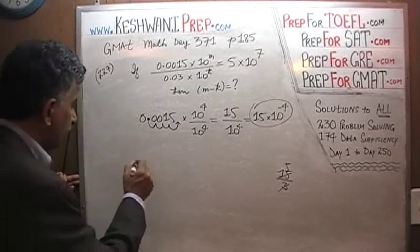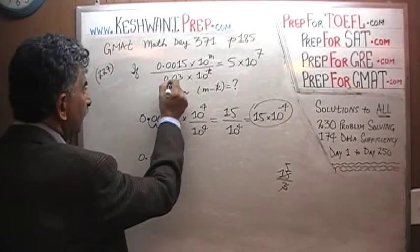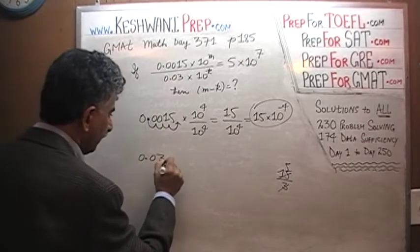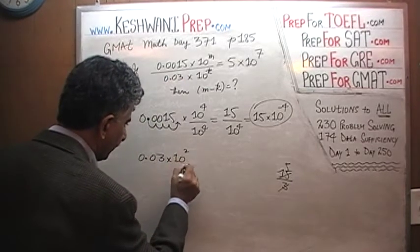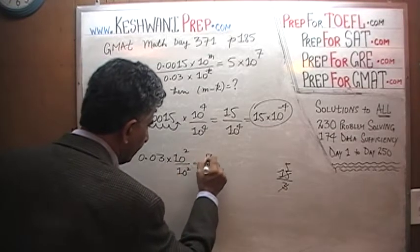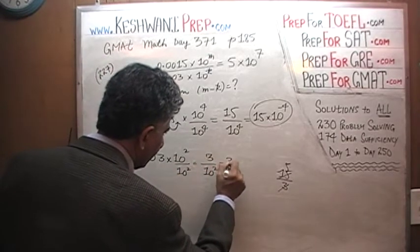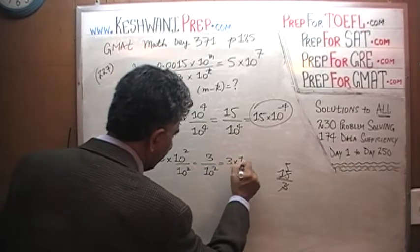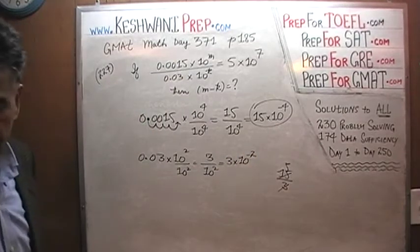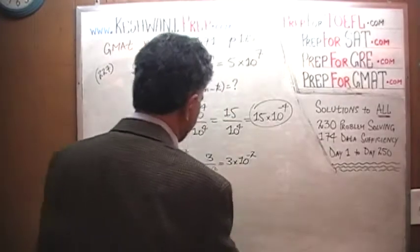Now let's look at the bottom part. Similarly, the bottom part is 0.03. Multiply the top and bottom by 100, that is 10 raised to 2, and we'll end up with 3 over 10 raised to 2, which can be written as 3 times 10 raised to negative 2. Same exact procedure as before.